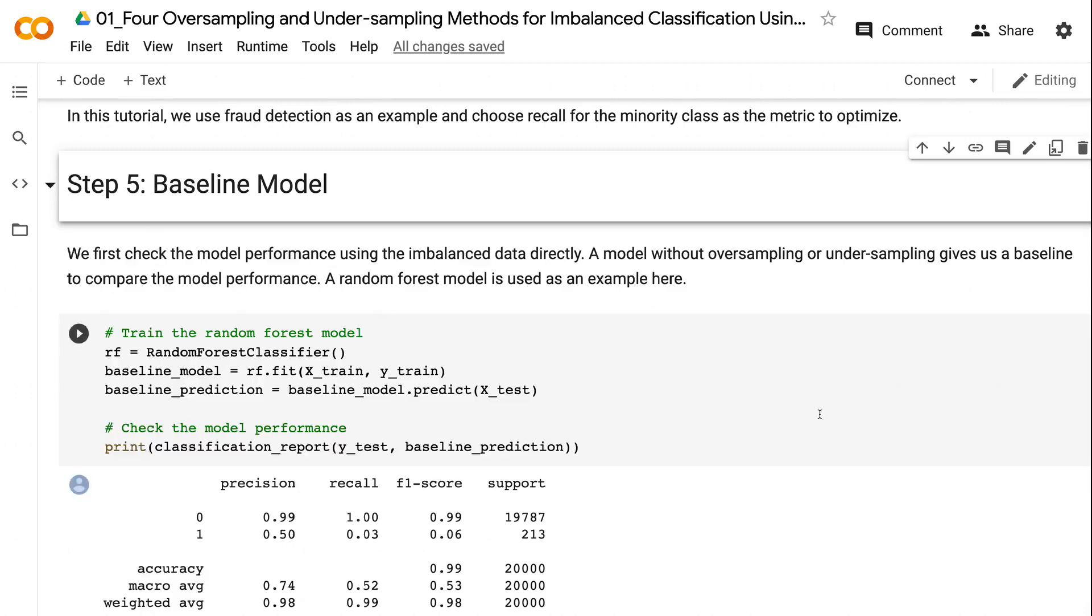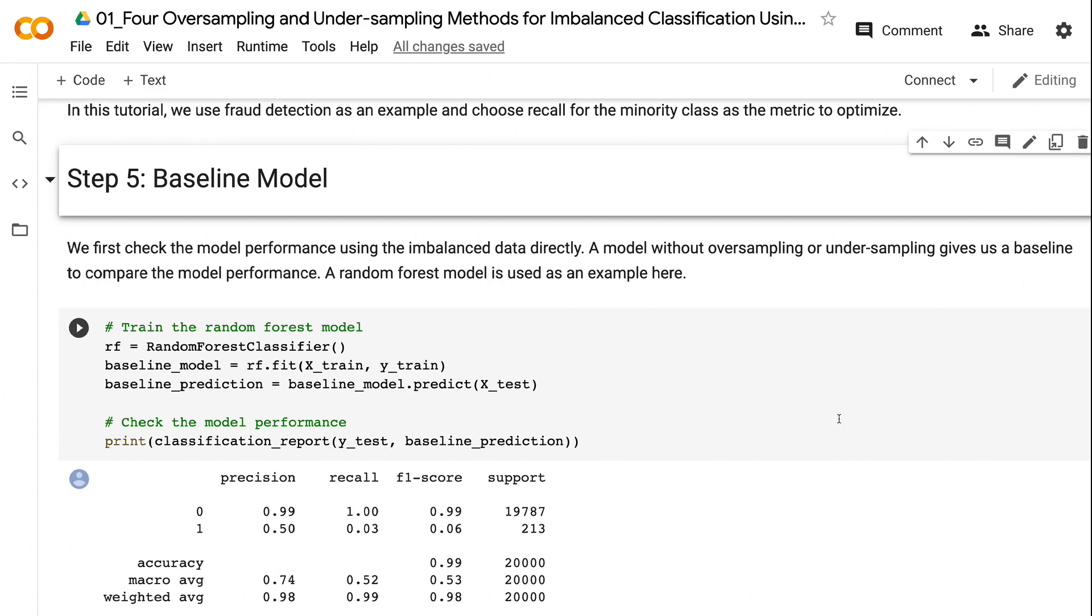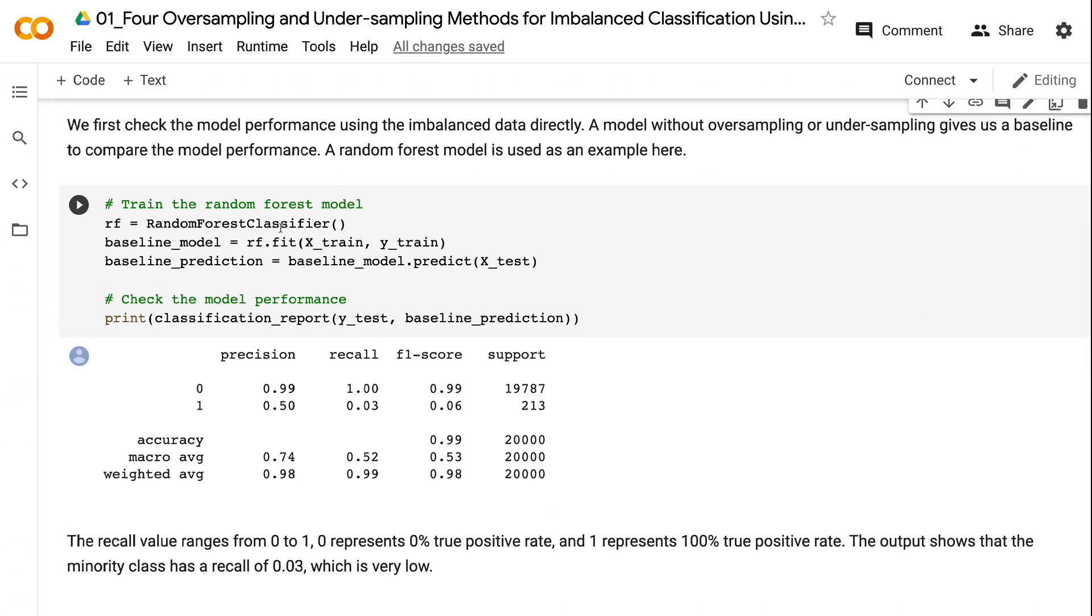We first check the model performance using the imbalanced data directly. A model without oversampling or undersampling gives us a baseline to compare the model performance. A random forest model is used as an example here.